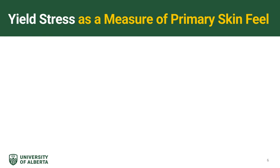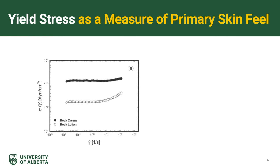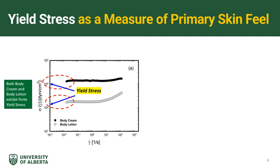Yield stress as a measure of primary skin feel. The figure on the left shows the flow curves, which is a representation of shear stress as a function of shear rate for body cream and body lotion at 35 degrees Celsius. For both products, the shear stress tends to approach a constant limiting value as shear rate decreases towards 0, indicating that these two products exhibit a finite magnitude of yield stress. The shear stress of a body cream is approximately 10 times larger than that of body lotion over the whole range of shear rates tested.